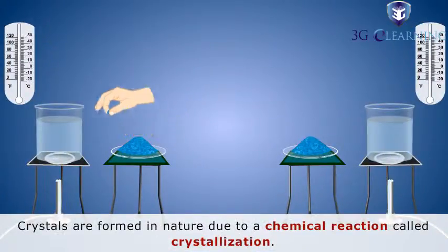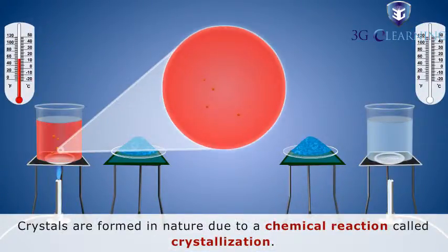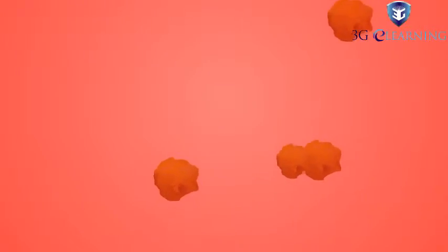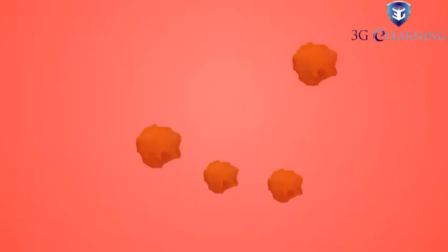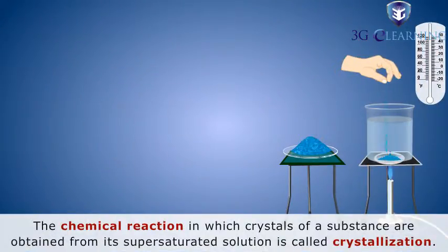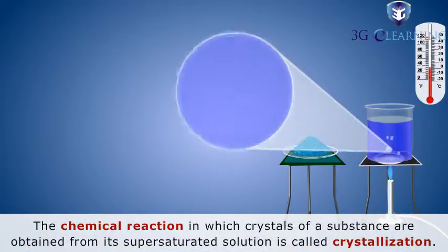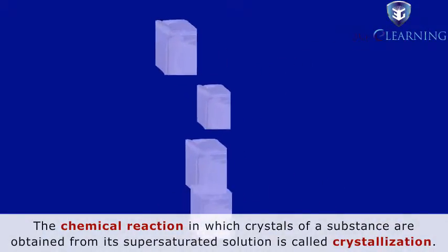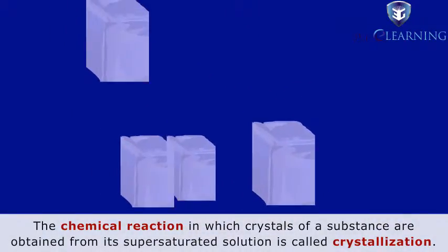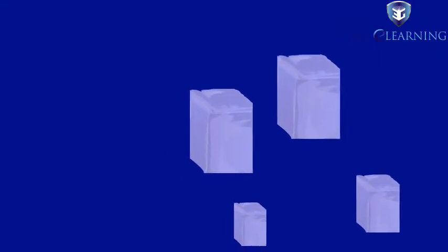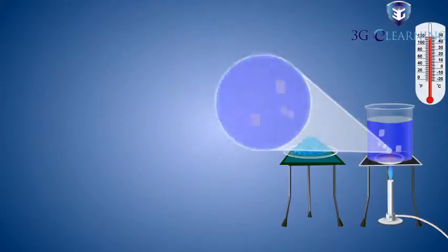Crystals are formed in nature due to a chemical reaction called crystallization. Crystals are the purest form of a solid substance found in nature. The chemical reaction in which crystals of a substance are obtained from its supersaturated solution is called crystallization. This is a method for obtaining a substance in its pure form.